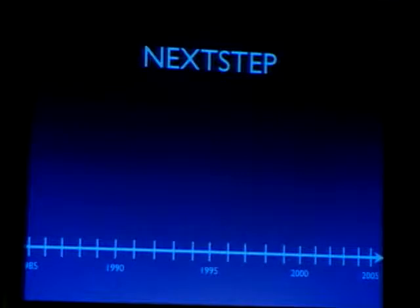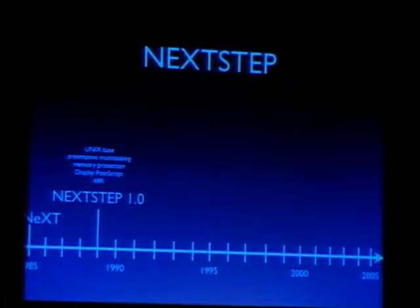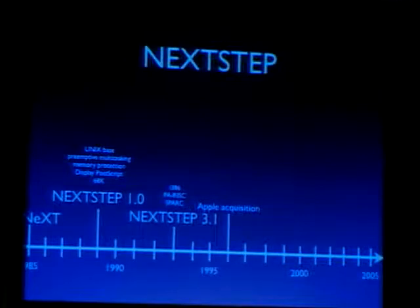NeXT was founded in 1985 and NeXTSTEP 1 was a powerful operating system with a unique interface — it supported preemptive multitasking, memory protection, a Display PostScript GUI, and ran on 68K hardware. One significant release was 3.1 because NeXT opened it to other CPU architectures: i386, PA-RISC, and Sun SPARC. When Apple acquired NeXTSTEP in 1996 it was ported to PowerPC, and classic Mac OS technologies were added: HFS, QuickTime, Toolbox, iTunes, and Finder.